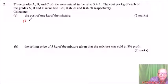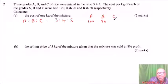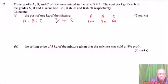We have the ratio A:B:C = 3:4:5. We have been given the cost of A = 120, B = 90, and C = 60 shillings. We are required to find the cost of 1 kg of the mixture. Since this is the ratio of the mixture, we can take 3 kg of A.